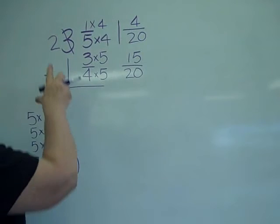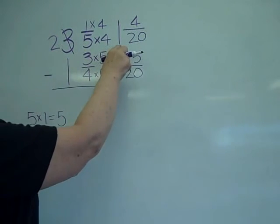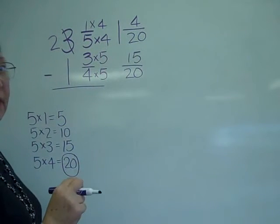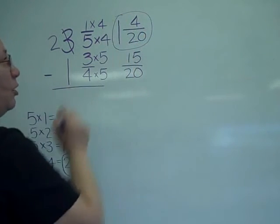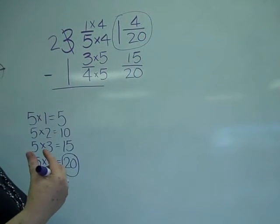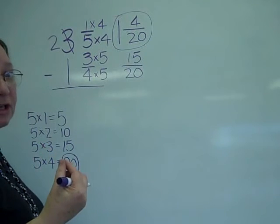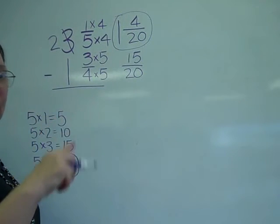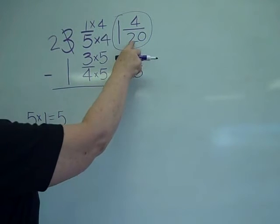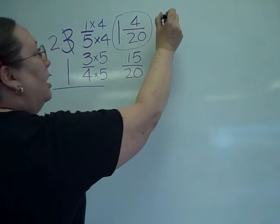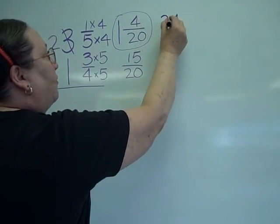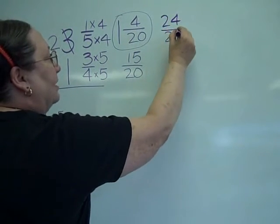So now what I have is the two and one and four twentieths. The one and four twentieths is what I want to work with. I need to make that into an improper fraction. Remember, that's where the top is bigger than the bottom. So I'm going to take my twenty times one is twenty, plus the four gives me twenty-four twentieths.